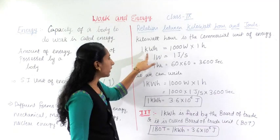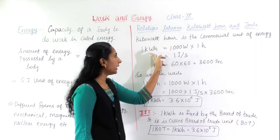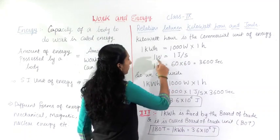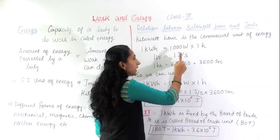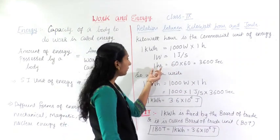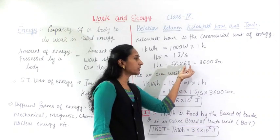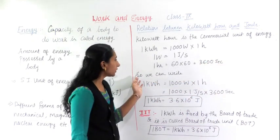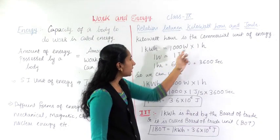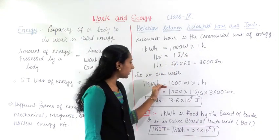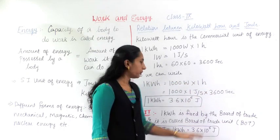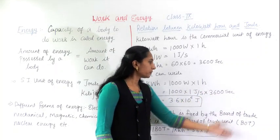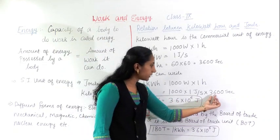One kilo means thousand, so kilowatt means one thousand watts. One kilowatt hour equals thousand watts into one hour. One watt equals one joule per second, and one hour equals 60 minutes into 60 seconds, which gives 3600 seconds. Substituting these values, one kilowatt hour equals 1000 watts multiplied by one joule per second multiplied by 3600 seconds.